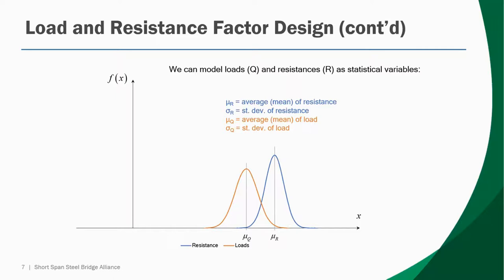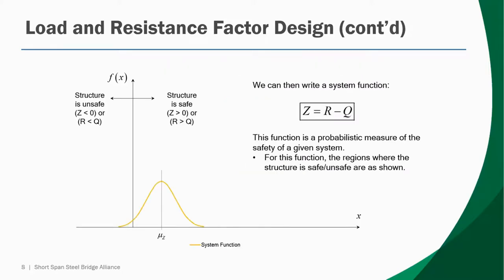One way of thinking about this is to consider identical components taken to the lab and failed one by one. Even if identically designed, there's always going to be some scatter in the data. Using measures such as the mean or standard deviation, you can model that scatter with a probability distribution. We have two distributions: one representing resistance and one representing loads. In a design scenario, you want resistances to be larger than loads — hence the resistance curve is on the right — but the key observation is they are on average larger than the loads, as shown in this slide.